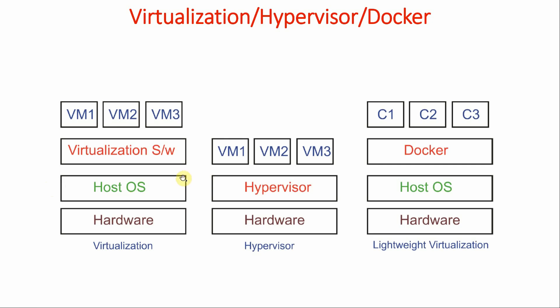One problem with virtualization was that the host OS layer was vulnerable, so they came up with another solution: the hypervisor, in which they removed the host OS layer. That means on hardware you can directly install the hypervisor, and on that you can create VM1, VM2, VM3. The two most robust hypervisors available are ESXi and Citrix XenServer.